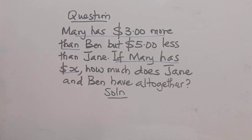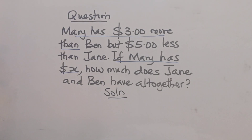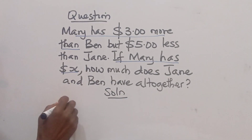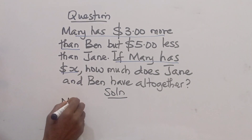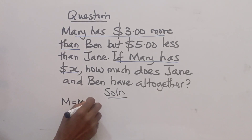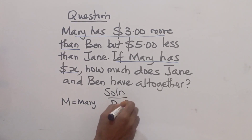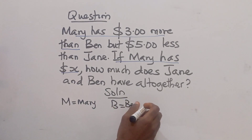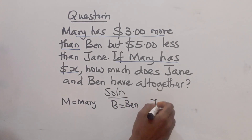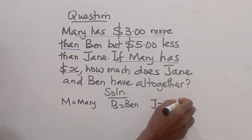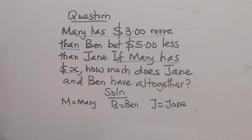The first statement says Mary has three dollars more than Ben. Let's use M for Mary, B for Ben, and J for Jim.